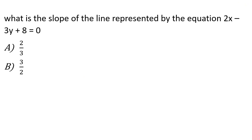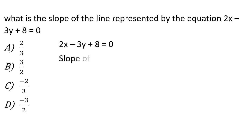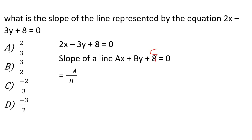First, what is the slope of the line represented by the equation 2x - 3y + 80 = 0? For a line ax + by + c = 0, the slope is equal to minus a by b. Here a equals 2 and b equals -3, so slope = -2 / -3 = 2/3. Option A.